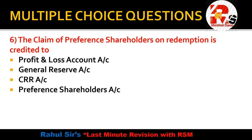Next question: the claim of preferential holders on redemption is credited to — Profit and Loss account, General Reserve account, CRR account, or Preferential Holders account? The claim of preferential holders is always transferred to the Preferential Holders account. The journal entry is: Preferential Capital Account debit, Premium on Redemption debit, to Preferential Holders account credit.